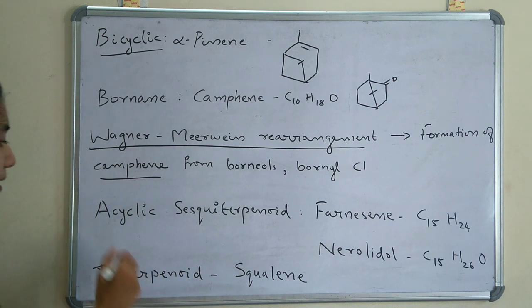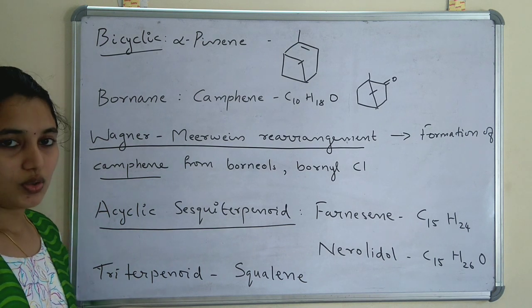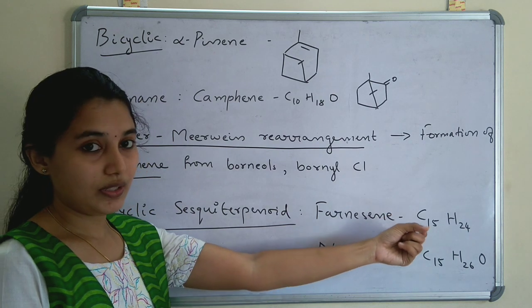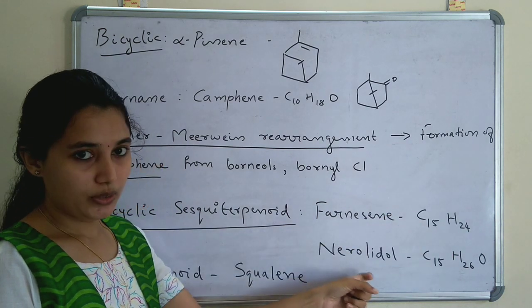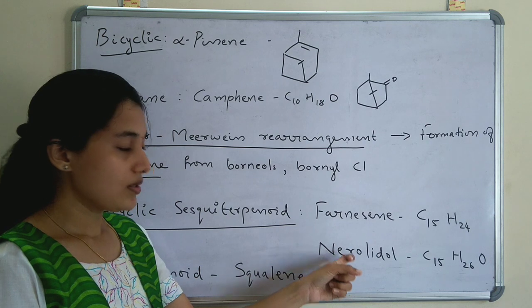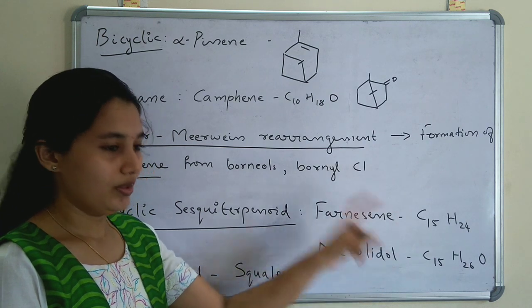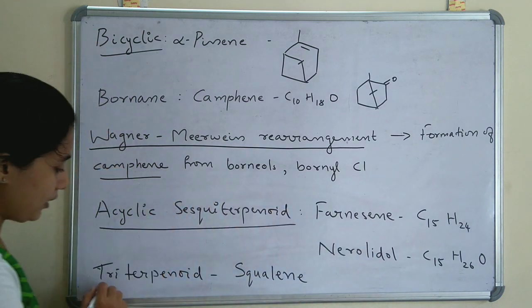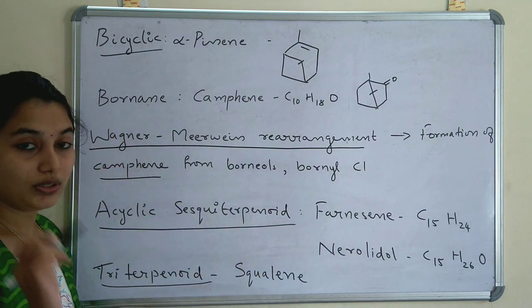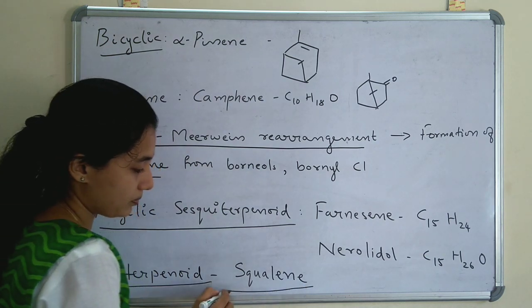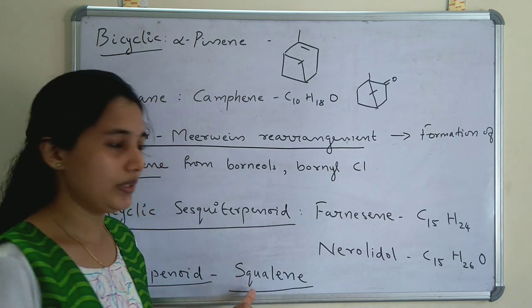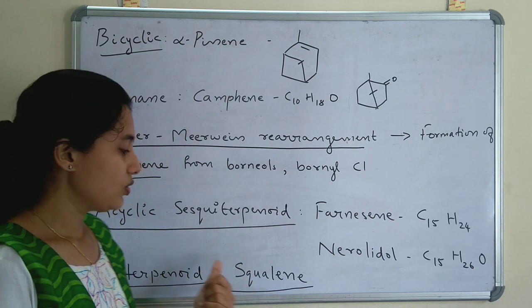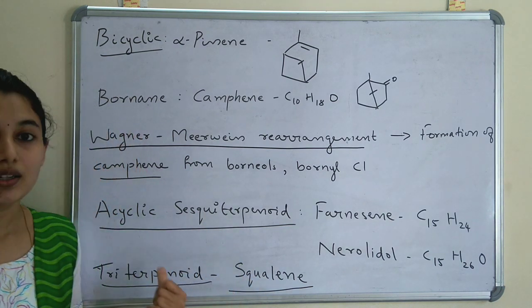Bicyclic sesquiterpenoids have examples such as farnesene (C15H24) and nerolidol (C15H26O). The next category is triterpenoids, and the example is squalene, which we have seen in cholesterol formation — squalene is the triterpenoid precursor to cholesterol.